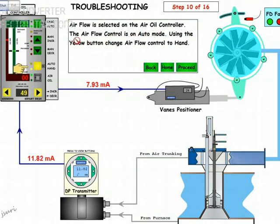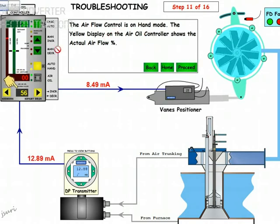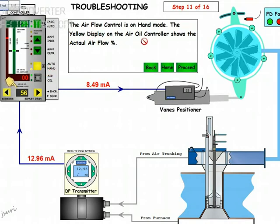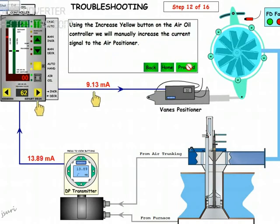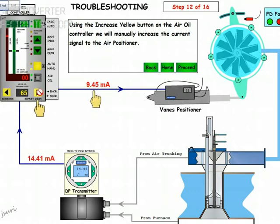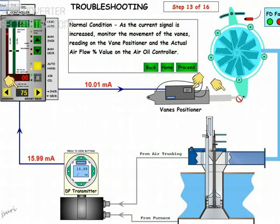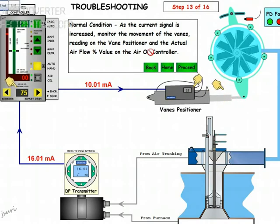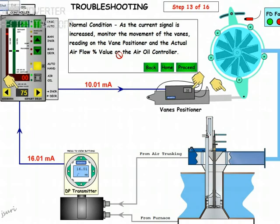Air flow is selected. I have changed from auto to hand and I am increasing it. The yellow button is for the air flow indicator. I am increasing the value here. Now you can see the vane positioner has moved and is now in the normal condition. I can see the current is increased and the movement of the vane positioner and the air flow are stable. This is the low value on the air oil controller — all are steady.